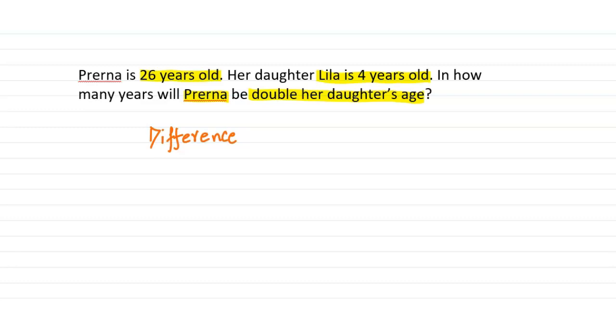between your age and your brother's age will always remain five years. So the difference between the ages of Prerna and Lila is 26 minus 4, which is 22 years. Now the question is when will Prerna double her daughter's age.